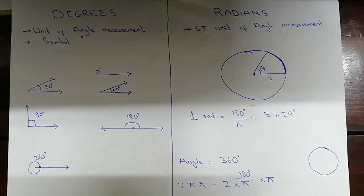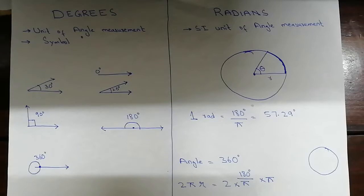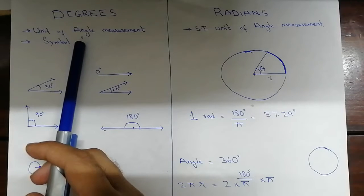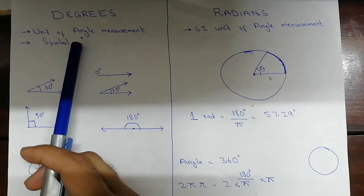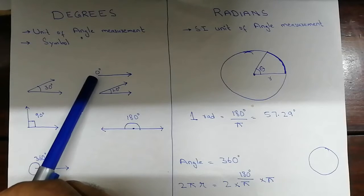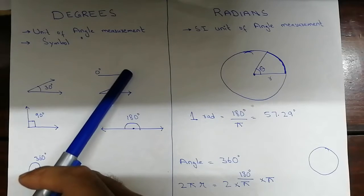Welcome to the new video. Today we will learn about degrees and radians. The unit of angle measurement is degree, and we usually measure angles by degrees. The whole circle has 360 degrees or 360 parts. We usually use a small circle symbol above the numbers to represent degrees — for example, 7°. Zero degrees means there is no angle at all.